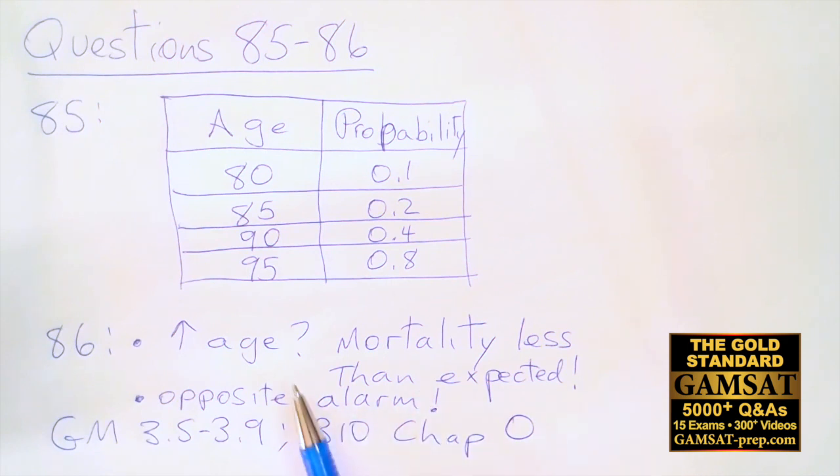Answer choice A is incorrect because if older people are frailer then we would expect they would be dying at a higher rate. Right away your opposite alarm should go off because answer choices A and D are in opposition, which means there's an increased chance the answer will be one of those.